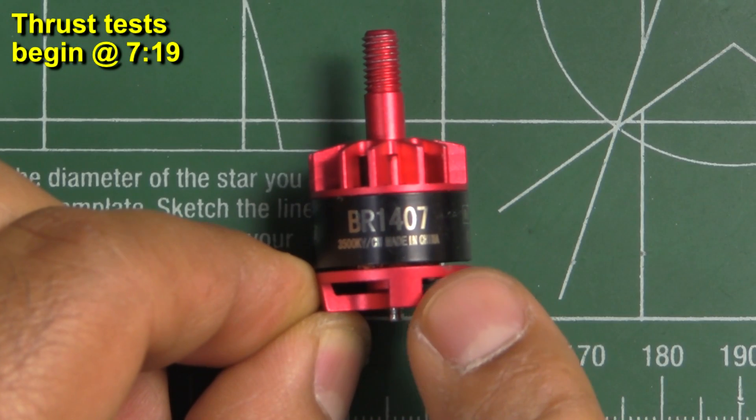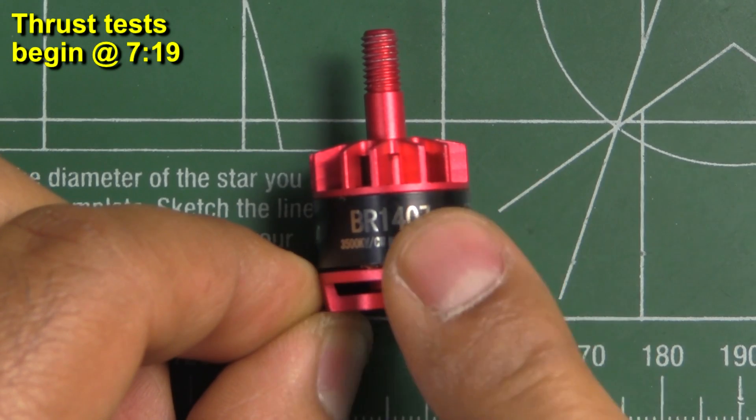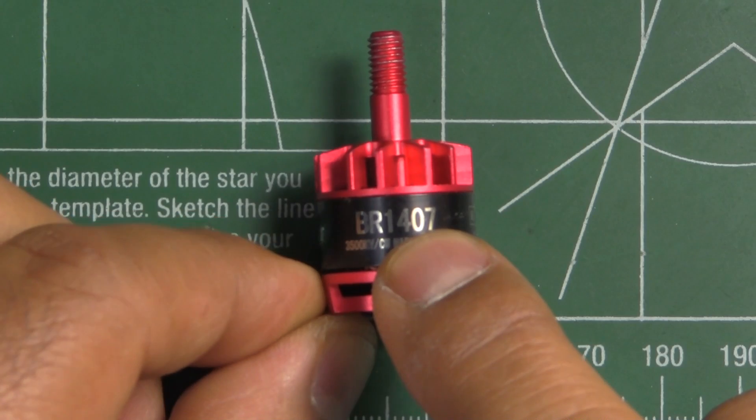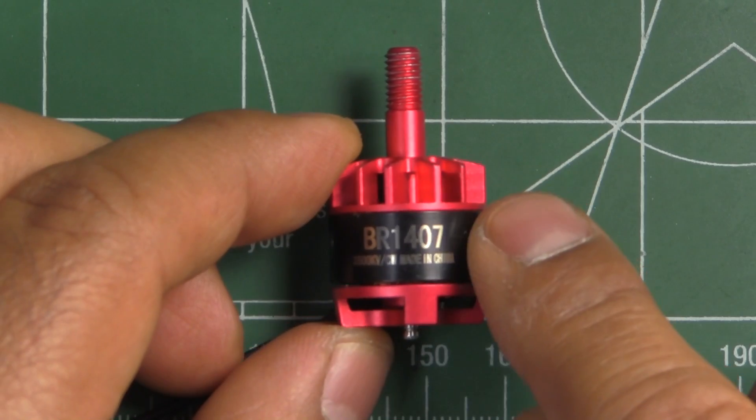Here's the Razor Star BR-1407 3500kV motor, this one's from Banggood. And this one is the version 1, the original one that was released a few months ago.